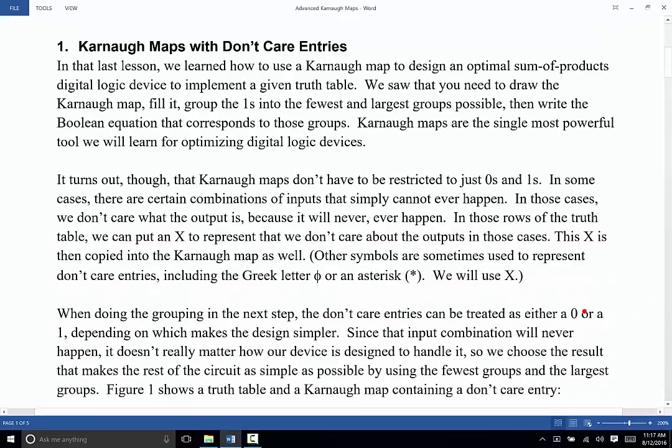The first of those, and probably the most important, is this idea of don't care entries. We're accustomed with truth tables and therefore with Karnaugh Maps that every single cell either contains a 0 or a 1. And it doesn't seem to make sense that a digital logic device would have an entry where they don't really care what the output looks like. But it turns out that there are some circumstances like that.